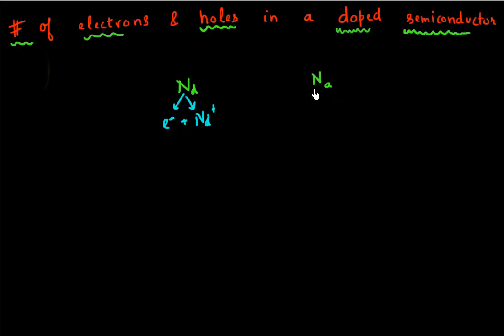Similarly, an acceptor atom, if it ionizes, accepts an electron from the lattice. So it leaves a positively charged hole in the lattice, and it also generates a negatively charged acceptor atom, which is not mobile and is fixed.